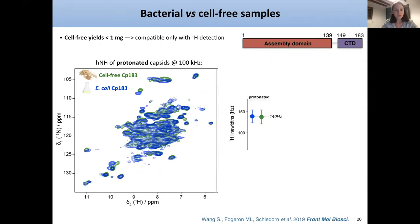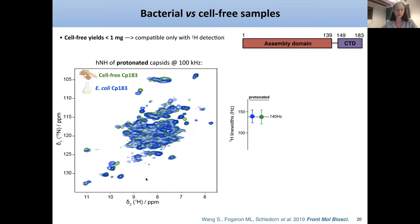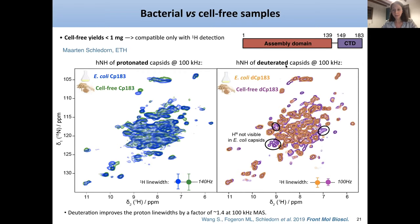I will now show you the spectra obtained on the cell-free sample, using the full-length protein including the C-terminal domain. Since the yields are not so high, we need to use proton detection and especially 0.7 mm rotors, spinning at 100 kHz. Comparing the cell-free sample in green and the bacterial sample in blue, they both yield nice spectra with similar proton line widths. We can also produce deuterated capsids using both expression systems, and the line widths improve by a factor of 1.4 when you deuterate.